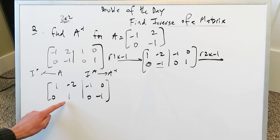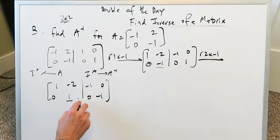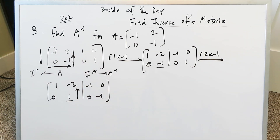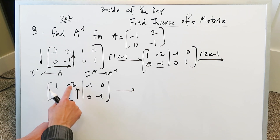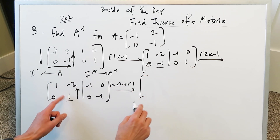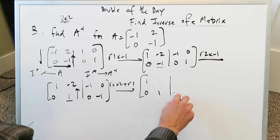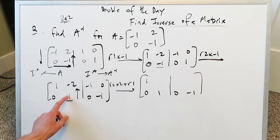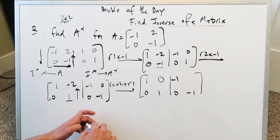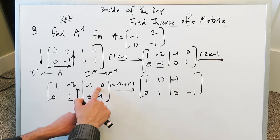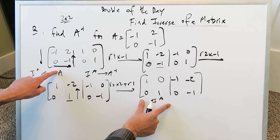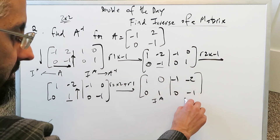We're getting a one, zero, one pattern and need a zero at the top-right. Working upward: apply row two times two plus row one. One times two plus minus two is zero; zero times two plus minus one is minus one; minus one times two plus zero is minus two. The identity matrix has developed in the original matrix's spot, and the original identity matrix has become the inverse: minus one, minus two, zero, minus one.